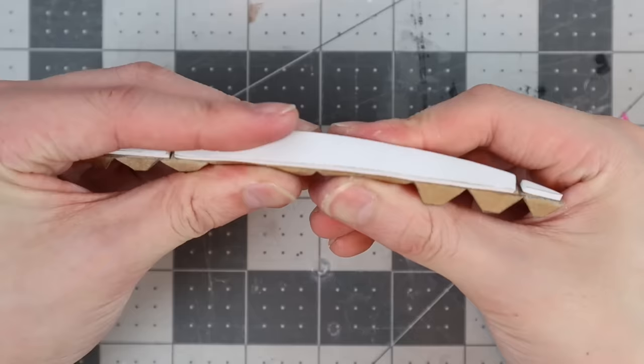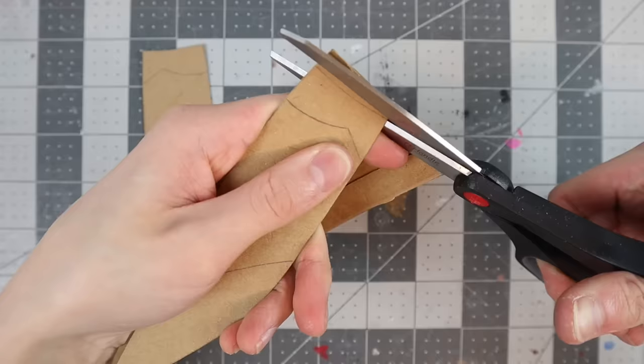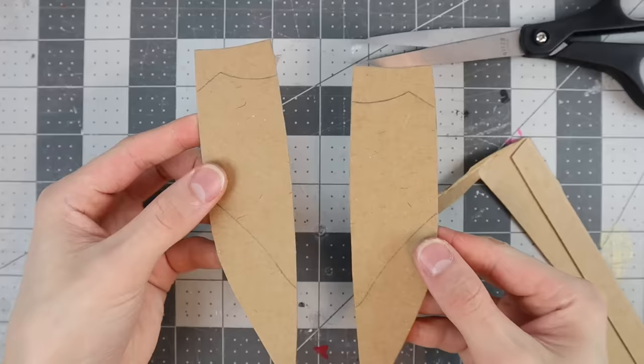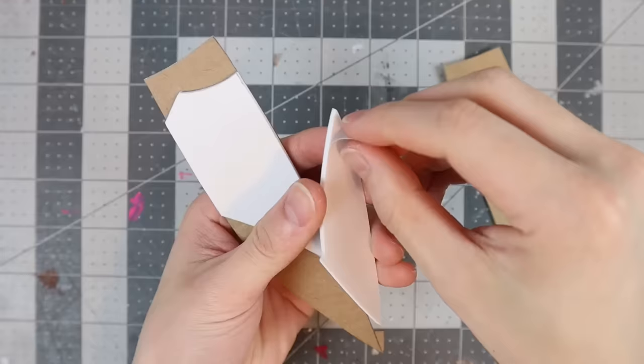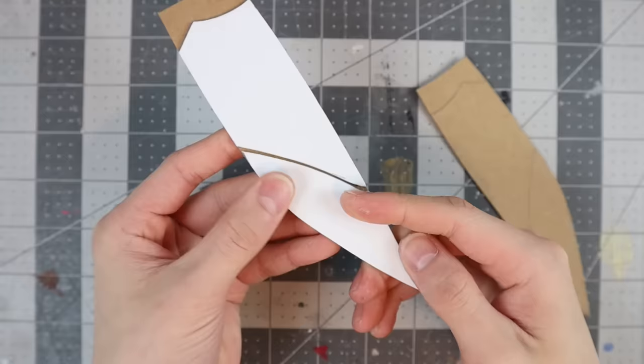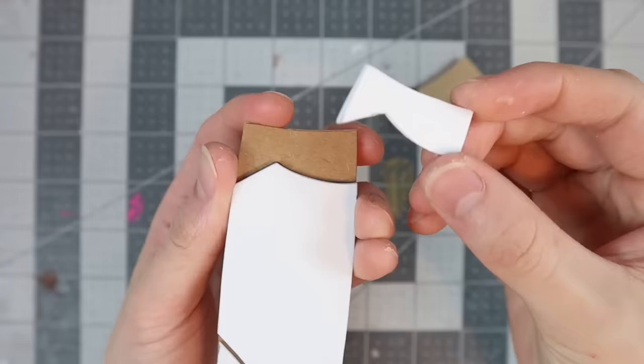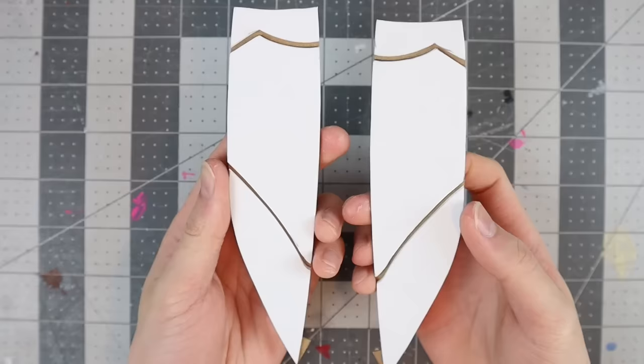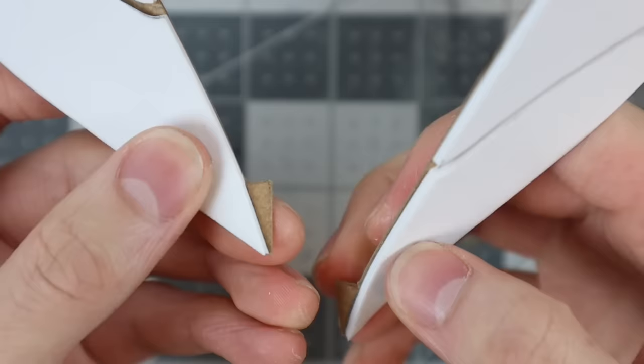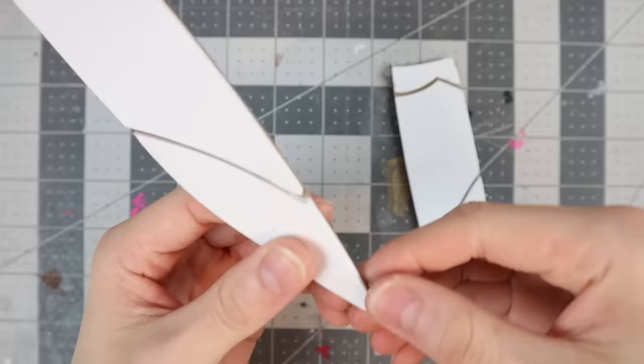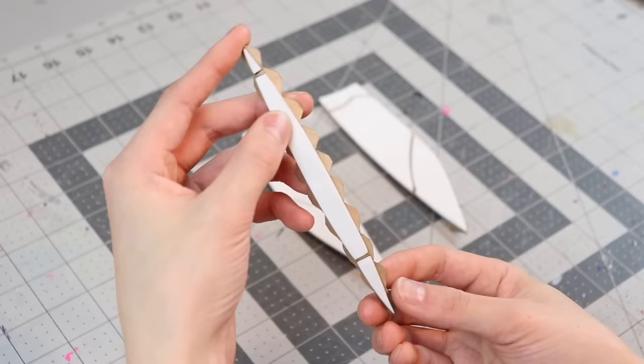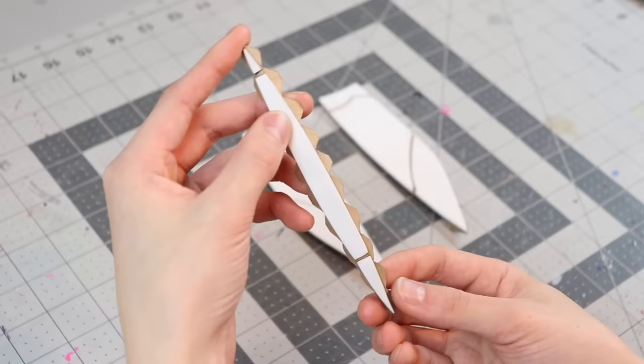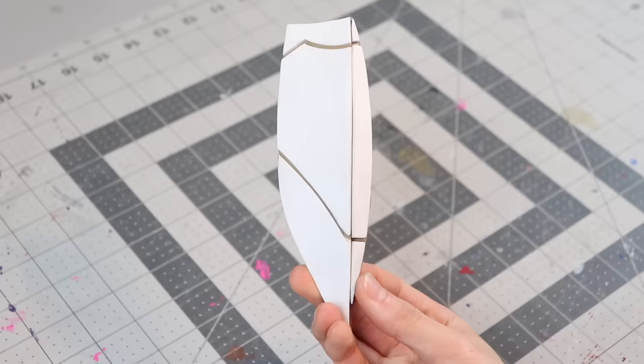As you can see, I folded over all those little tabs, and that's just going to help us later on when we go to connect the pieces together. Alright, well we can go ahead and set that piece aside for now, because we're going to work on some of the other pieces that are going to connect onto those tabs that we just folded. Now I can assemble these pieces together, which will create that sort of cone look that we're going for, and I can do that by simply gluing the pieces together using the tabs.